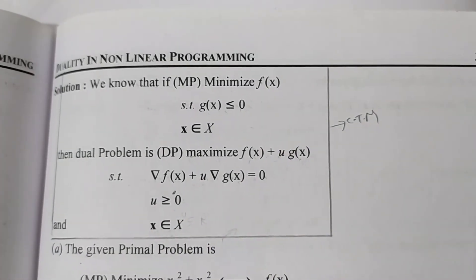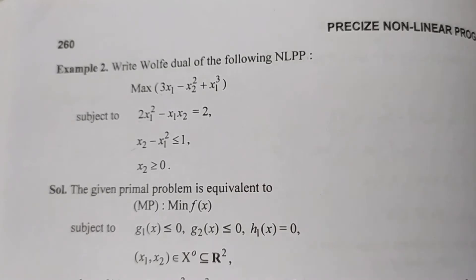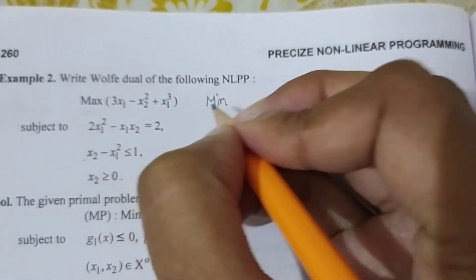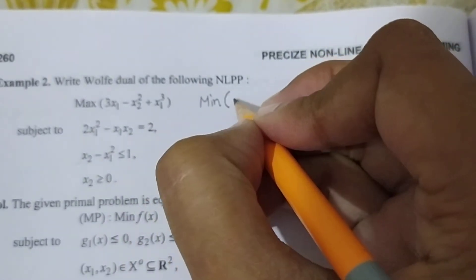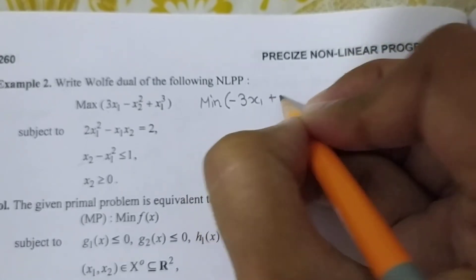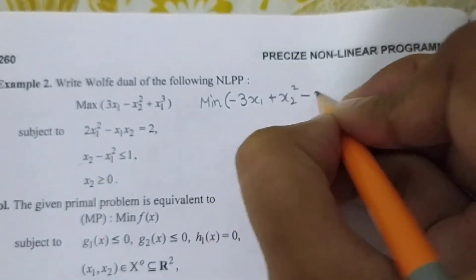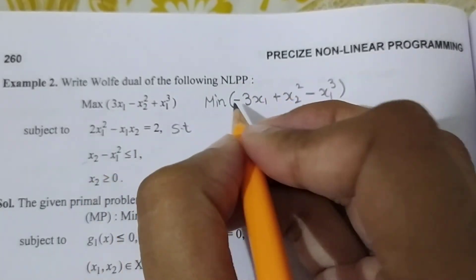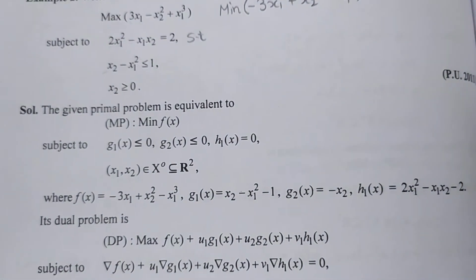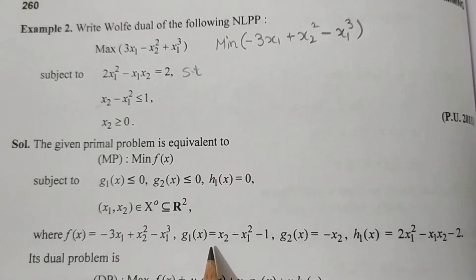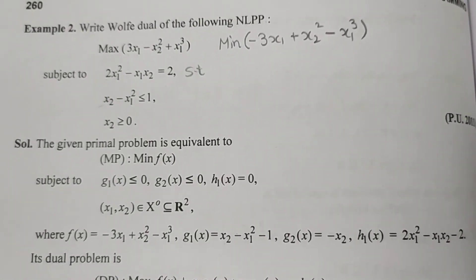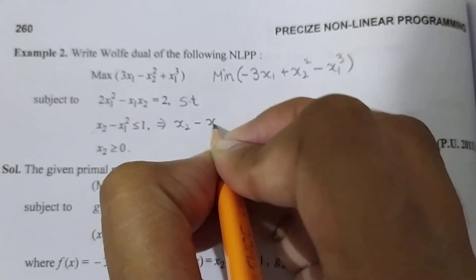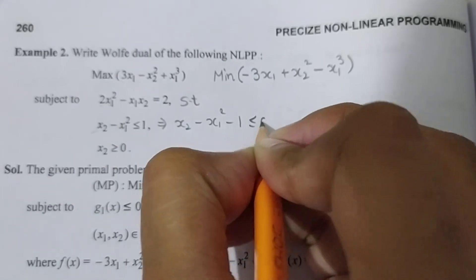पहले function को minimum बनाते हैं — इसके लिए negative के साथ multiply कर देंगे। तो f(x) बनेगी: minus 3x1 plus x2 square minus x1 cube. Subject to — g1 की value: x2 minus x1 square minus 1 less than equal to 0.